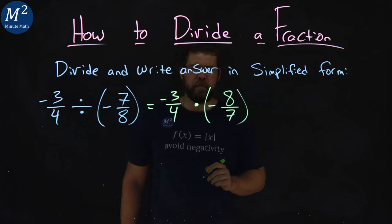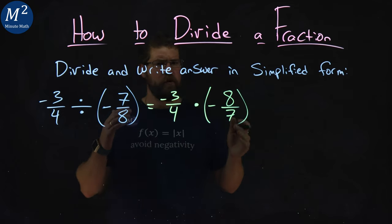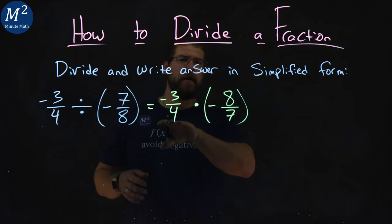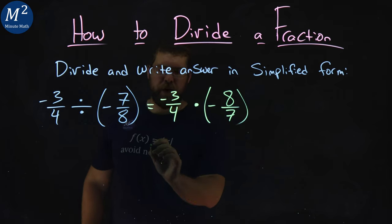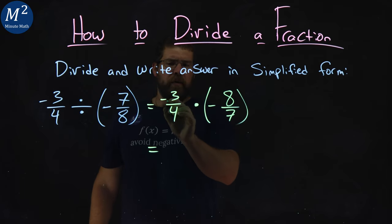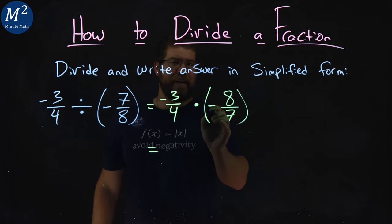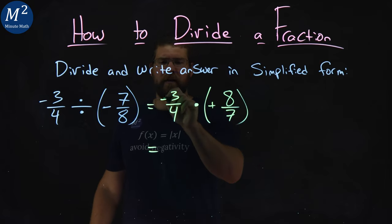Okay, now our rules with multiplying fractions: multiply across the numerator and across the denominator. Now, the negative signs—negative times a negative becomes a positive, so we can write that out right there.